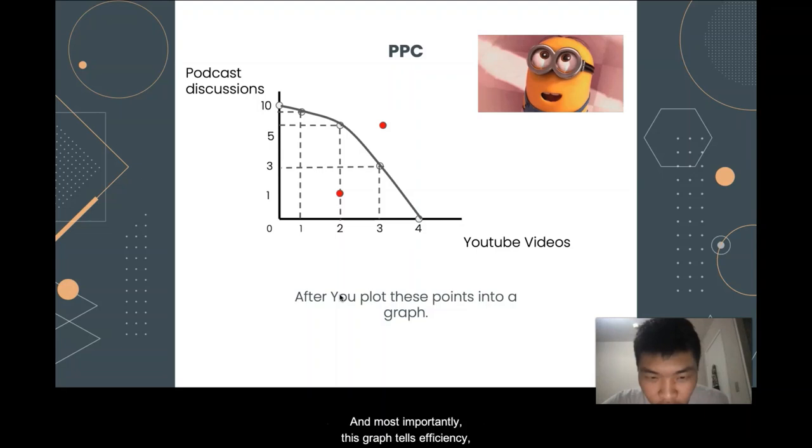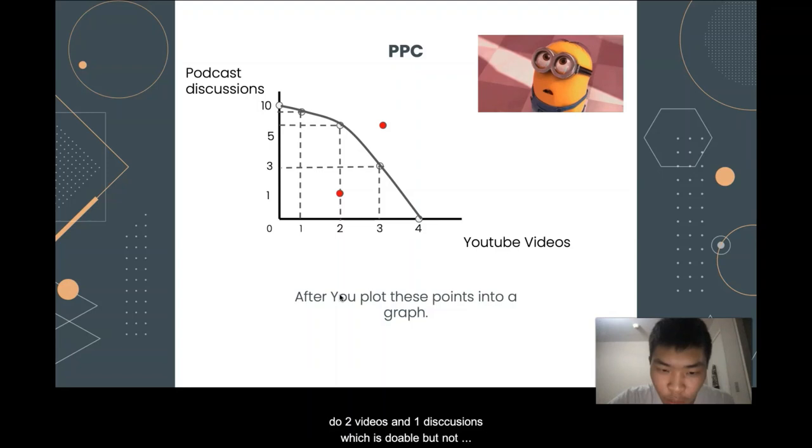And most importantly, this graph also tells efficiency. If this group decided to do two videos and one discussion, which is doable but not efficient with the resource shown in the red dot. If this group decided to make three videos and seven discussion, which is impossible because limited resources are not allowing that, showing the red dot too.